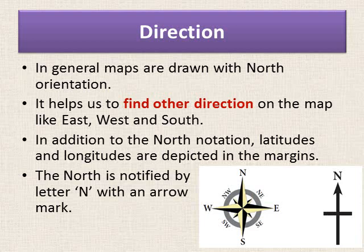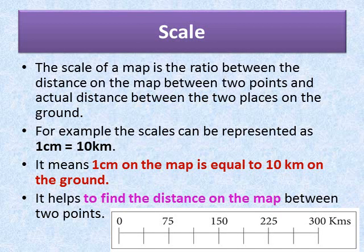Now let us see what is the scale. The scale of a map is a ratio between the distance on the map between two points and the actual distance between two places on the ground. For example, a scale can be represented as: 1 centimeter is equal to 10 kilometers. It means 1 centimeter on the map is equal to 10 kilometers on the ground, and it helps us find the distance between two points on the map.